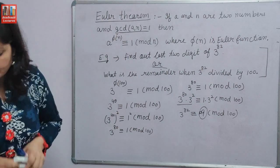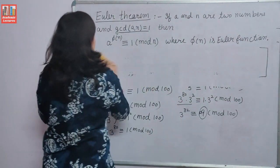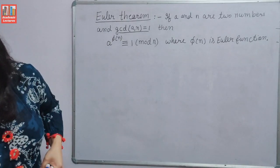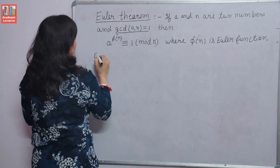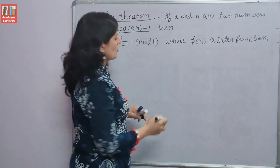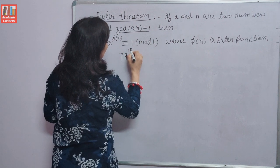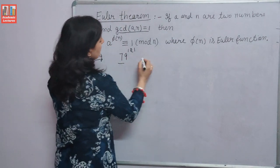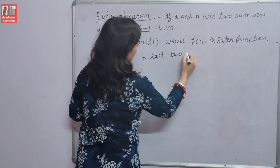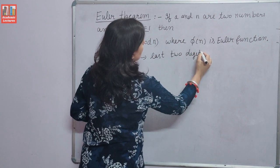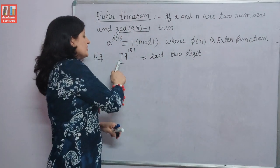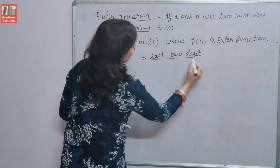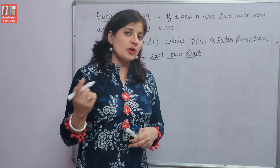Let's do one more question. Find out the last two digits of 79 raised to the power 121. The same question can also be: what is the remainder when 79 raised to the power 121 is divided by 100? Same procedure — if asked for last two digits or remainder when divided by 100, we use Euler's theorem.